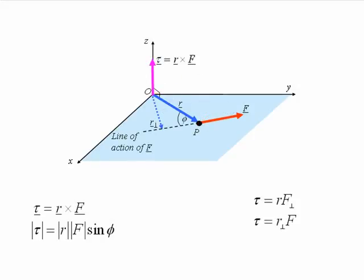Or alternatively, the torque equals R perpendicular times F, where R perpendicular is the perpendicular distance between O and the line of action of F. In other words, the moment arm of F.